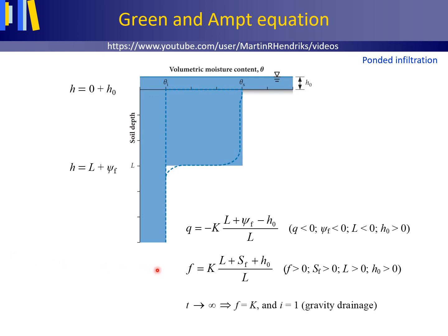From this equation it is clear that as infiltration continues and T approaches infinity, L becomes larger and larger, causing the hydraulic gradient and consequently the infiltration rate f to gradually decline during infiltration. Secondly, after quite some time has passed, L will be much larger than both Sf and H0, and the hydraulic gradient — indicated as lowercase i — will be reduced to a value of 1, causing the final infiltration rate to be equal to the saturated hydraulic conductivity k. This is called gravity drainage.